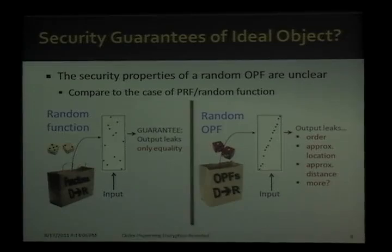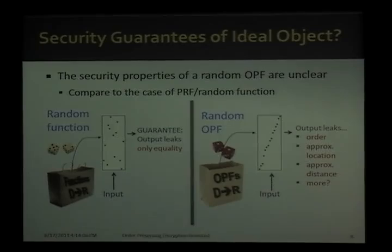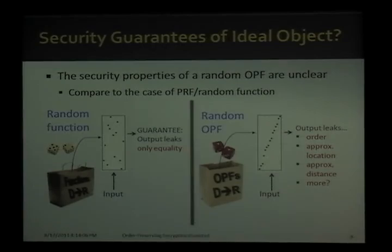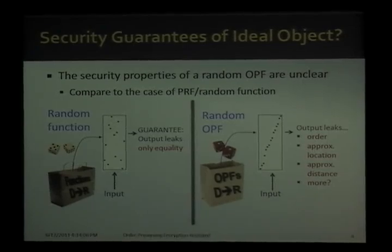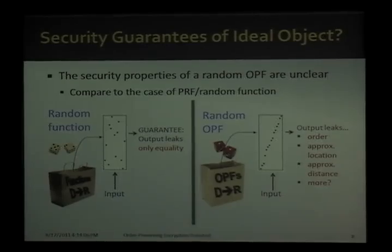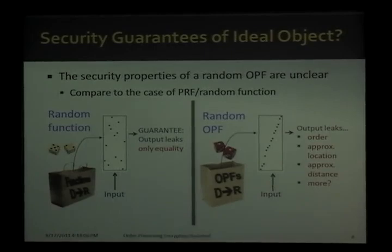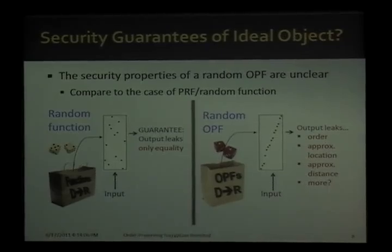The case for a random order-preserving function is slightly less clear. On any input, the output definitely leaks order because it's order-preserving, but it also leaks things like approximate location — if you see a small ciphertext, it likely came from a small input. It also leaks approximate distance — if you see ciphertexts that are very far apart, they likely came from inputs that are very far apart. These questions about what a random order-preserving function leaks held us back from recommending people implement our scheme, and we left it as an open problem to characterize this leakage.